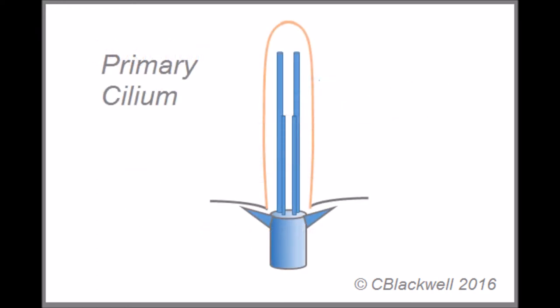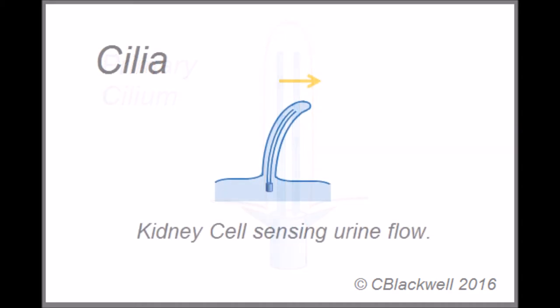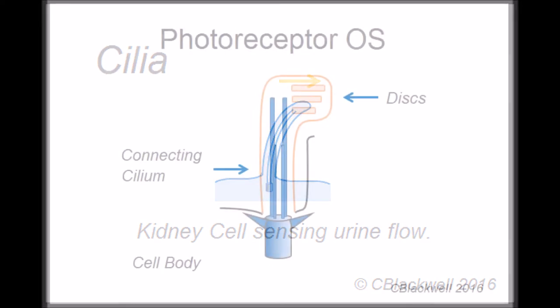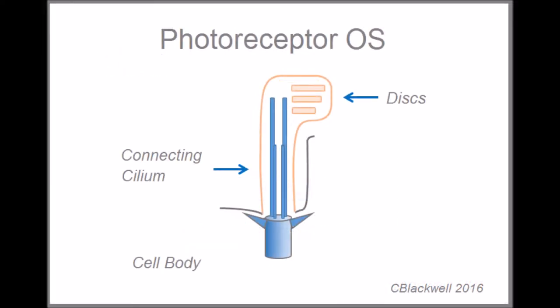Other cilia do not move, rather they are sensory. Think of the cilia as an antenna, protruding from the cell into the surrounding environment. In kidney cells, they serve an important function in sensing the direction of urine flow, or important for us, in photoreceptors.